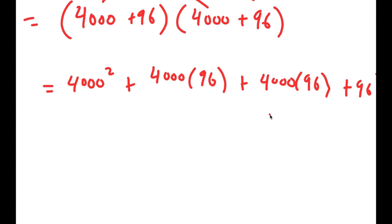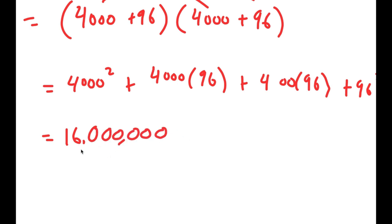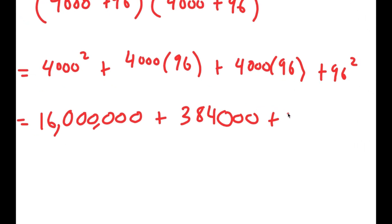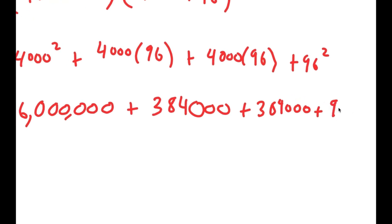Now, 4000 squared: 4 squared is 16 and 1000 squared is a million, so 4000 squared is 16,000,000. Then 4000 times 96: 4 times 96 is 384, so 4000 times 96 is 384,000. That term appears twice, giving 768,000. Finally, 96 squared is 9,216. So I have 16,000,000 plus 768,000 plus 9,216.